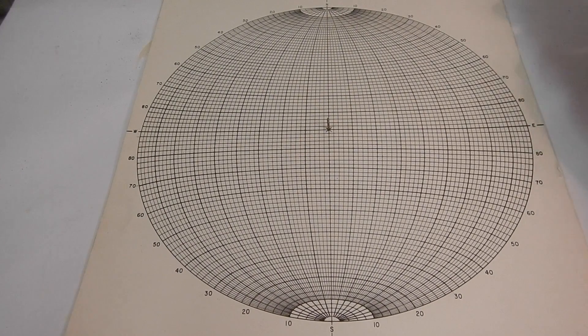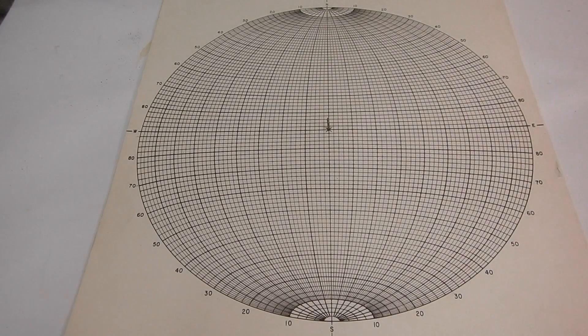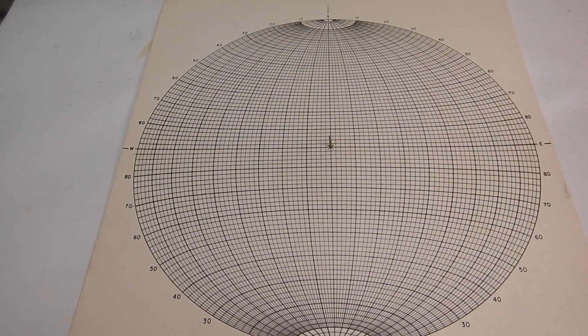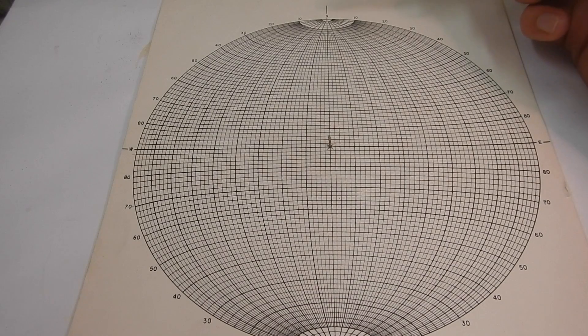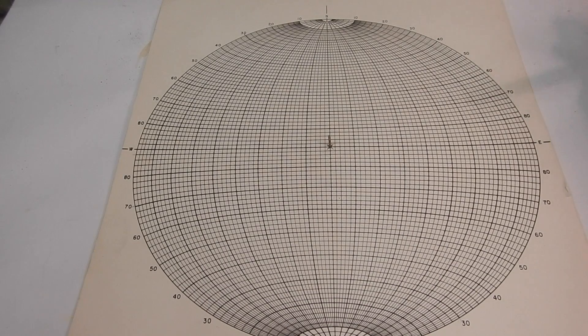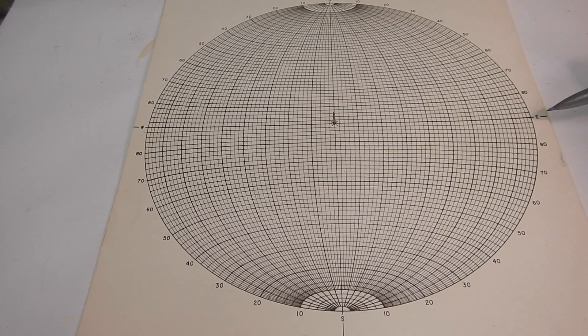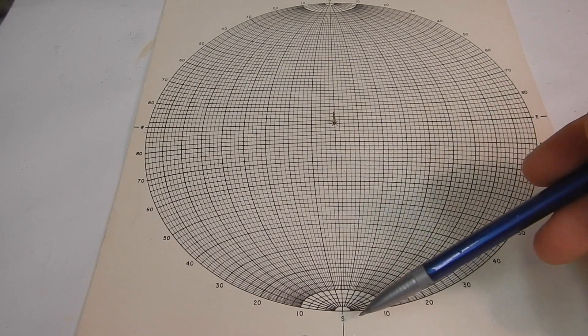But again if we go through this we have north up here, north up here 10, 20, 80 to 90 which is at east and then it goes back down east 80, 70 all the way to south.